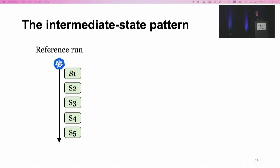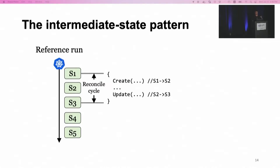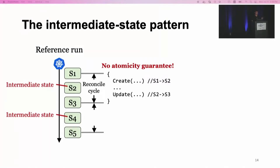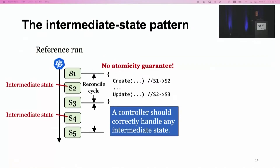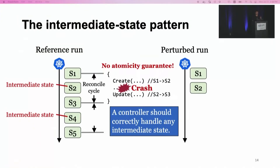The first pattern is the intermediate state pattern. Controllers run reconciliation processes in cycles. In every reconcile cycle, the controller typically issues multiple updates to the cluster state — for example, the first creation advances the state from S1 to S2, and the second update advances it from S2 to S3. There is no atomicity guarantee in these reconcile cycles, so once the controller crashes in the middle of a cycle, it has to start a new reconcile cycle from an intermediate state such as S2 or S4. To test whether the controller correctly handles intermediate states, SIEVE crashes the controller in the middle of a reconcile cycle, forcing it to restart from an intermediate state. Failing to handle this correctly is a serious bug.